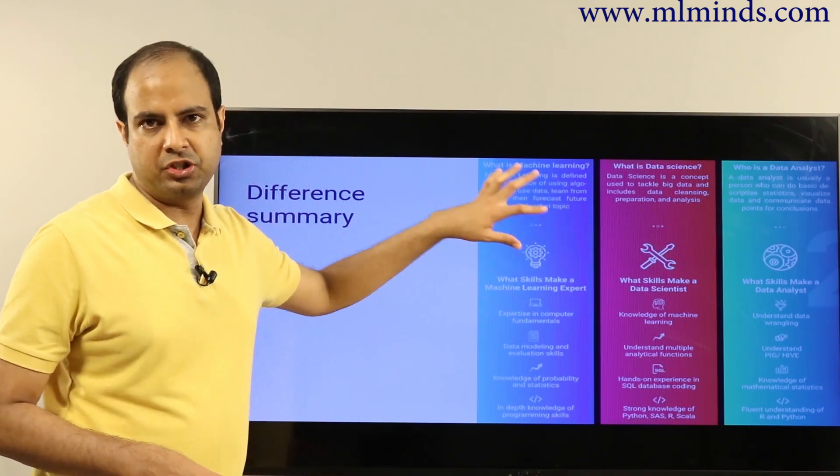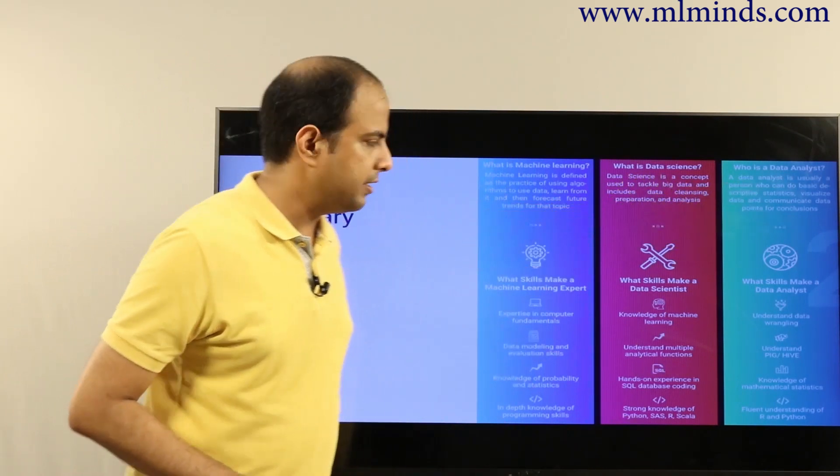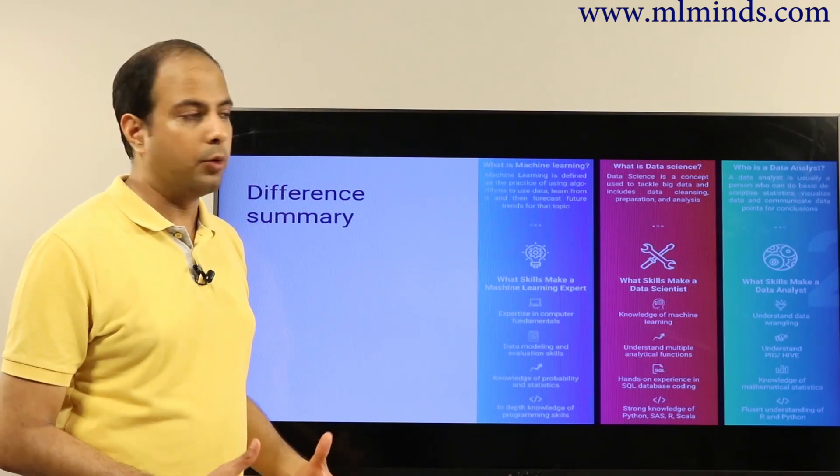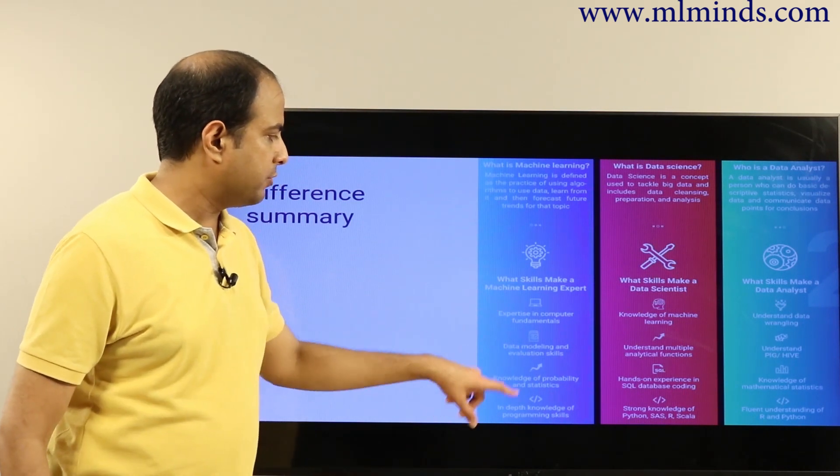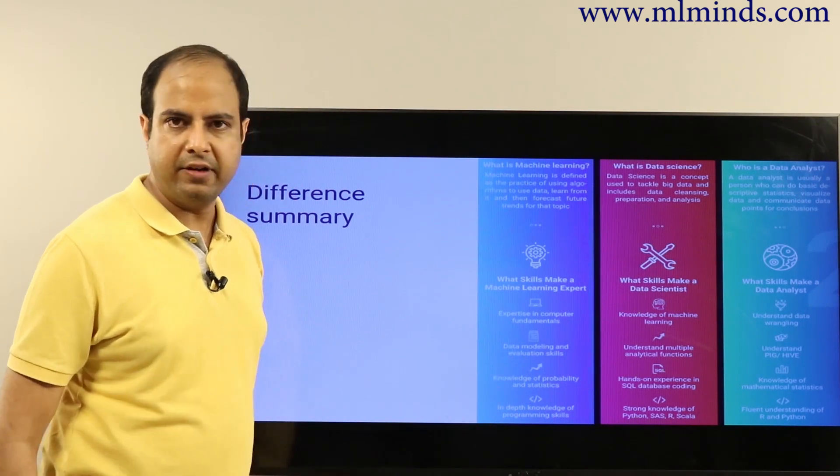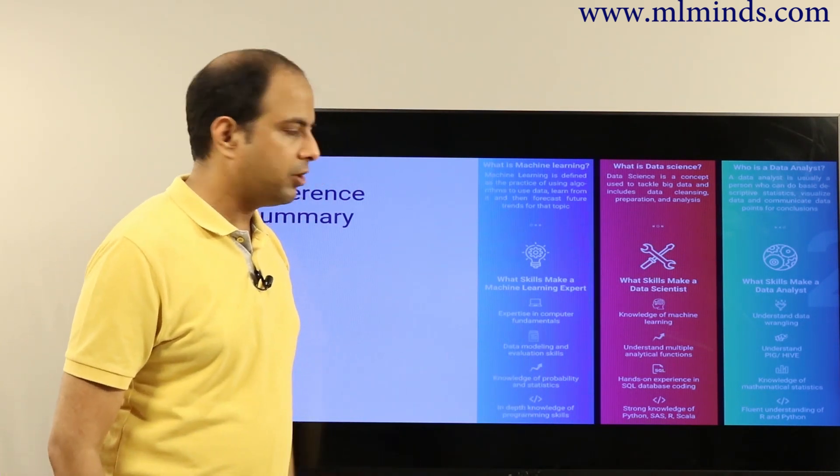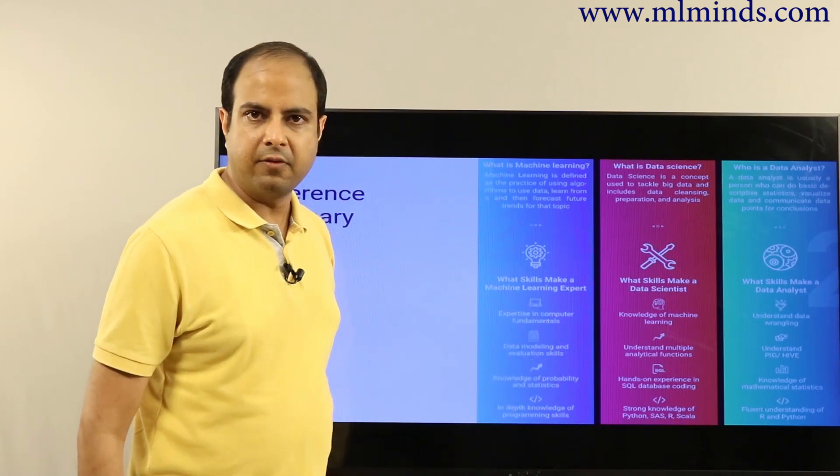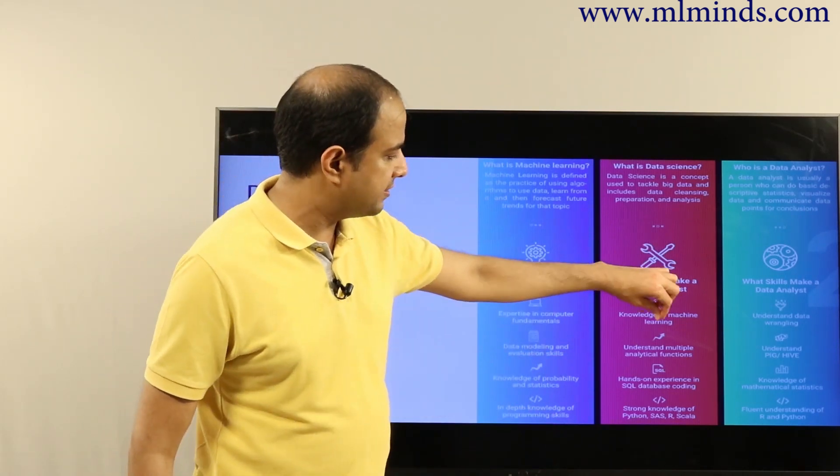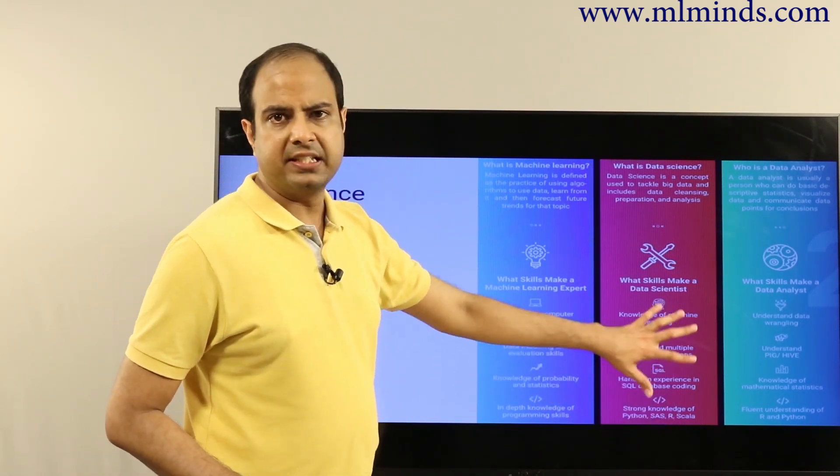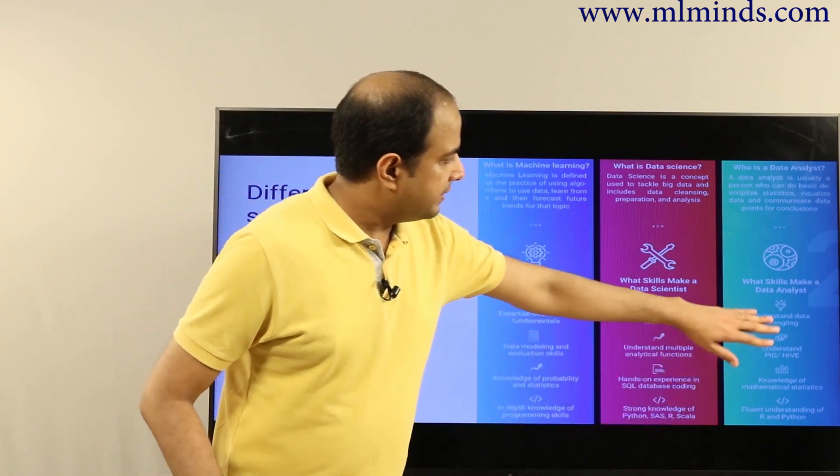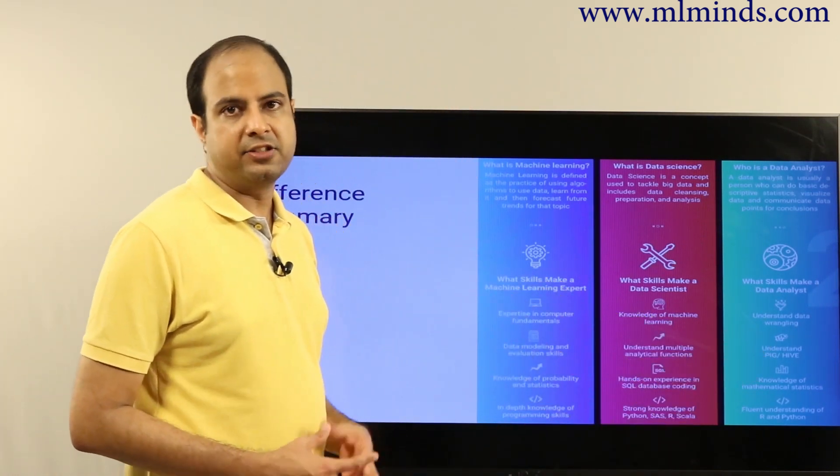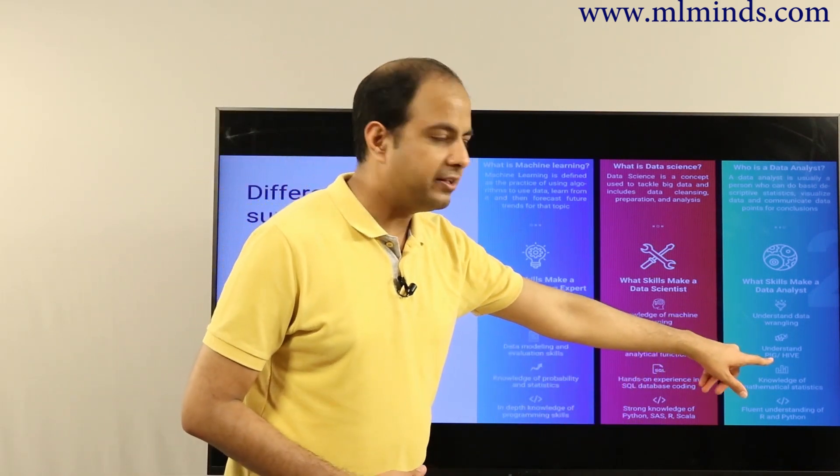Machine learning experts actually need much more stronger set of skills versus data science or a data analyst. Data analyst requires much lesser, cognitively much less difficult to obtain skills. Machine learning experts require computer science fundamentals, data modeling evaluation skills, knowledge of probability and stats, and in-depth knowledge of programming. Data scientist essentially needs some understanding of machine learning and a whole bunch of data massaging skills. Data analyst needs skills to obtain the data nicely and store the data nicely.